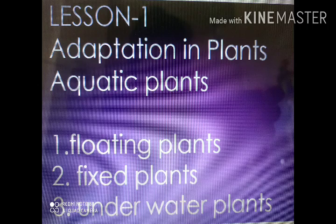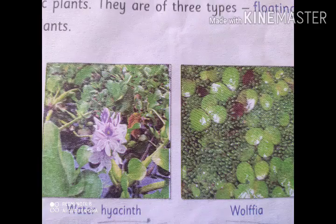Floating plants float freely on the surface of water. Fixed plants have their roots fixed to the mud at the bottom of the pond. Underwater plants remain completely under the water and are rooted in the soil. These are two examples of floating plants.